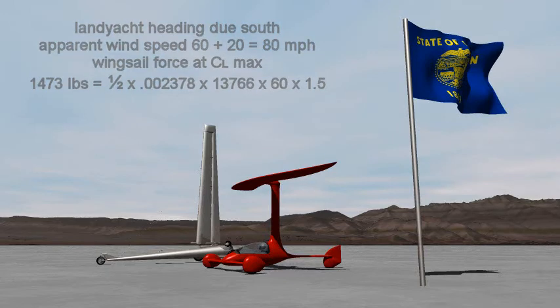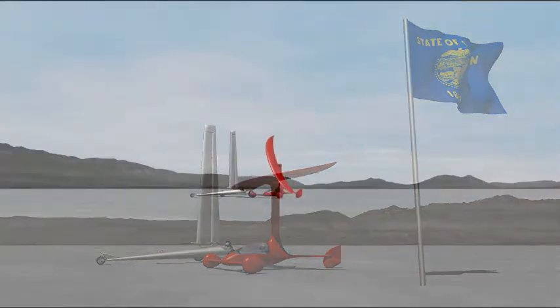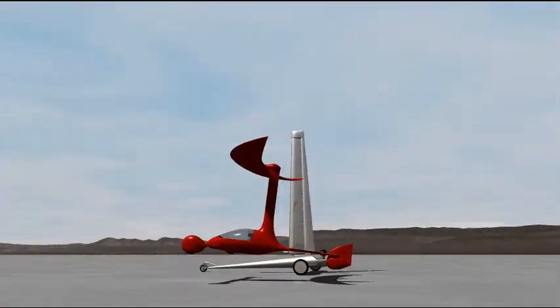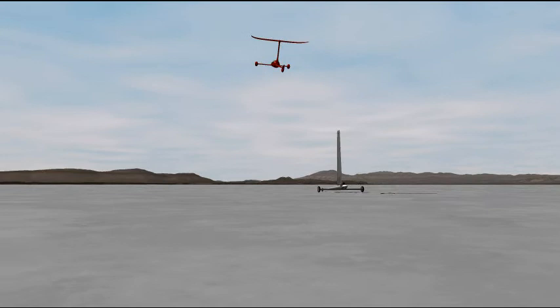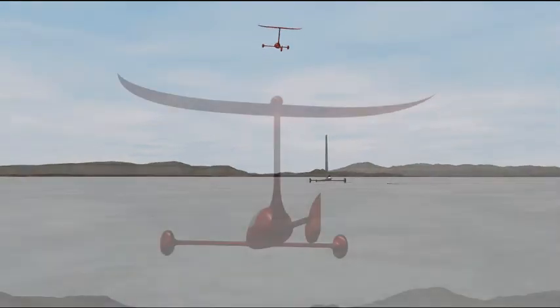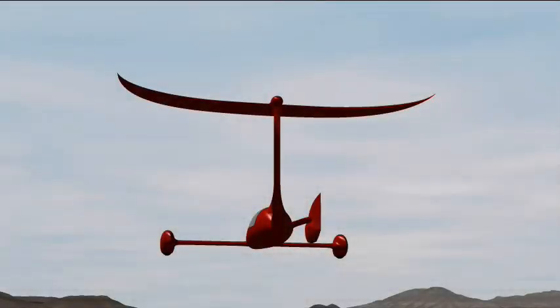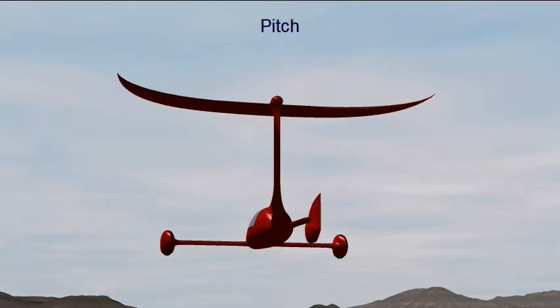By rotating the wing sail to a horizontal position, this force can be redirected upward, enabling Velociraptor to fly. The yacht's center of mass is suspended directly below the center of lift of the wing sail, like the pilot of a hang glider. In flight, yacht pitch and roll are adjusted by movements of the rudder and wing sail.